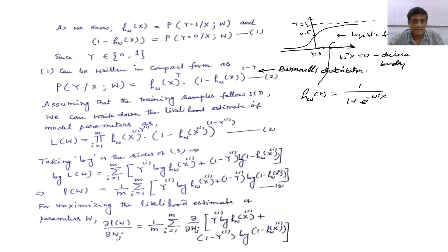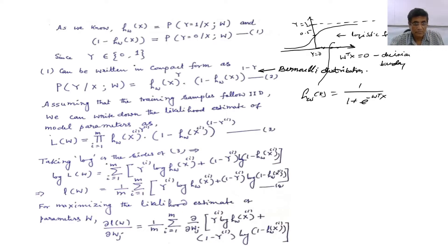Assuming that the training samples follow IID, we can now write down the likelihood estimate of the model parameter. From this distribution we can calculate and estimate the likelihood of the model parameter like this — it is a product over m samples, i = 1 to m, of h(x_i; w)^y_i times (1 - h(x_i; w))^(1 - y_i). This is the likelihood function of w, but it is very difficult to compute, so we take the log — that is why the name log-likelihood.